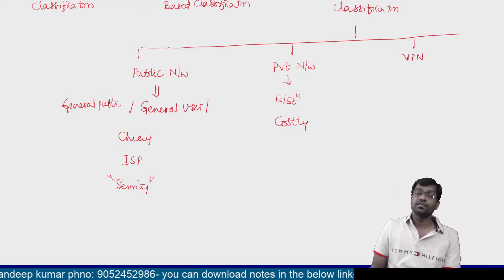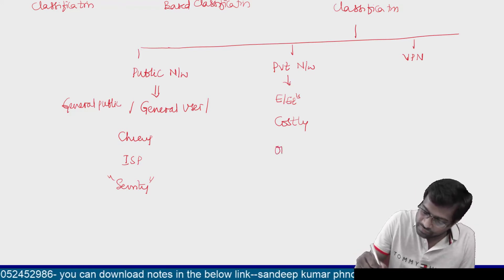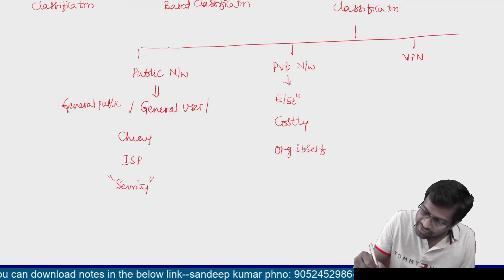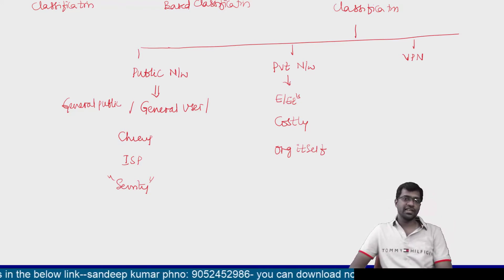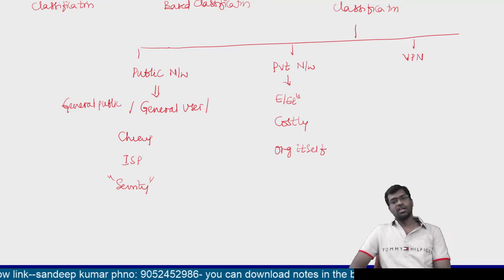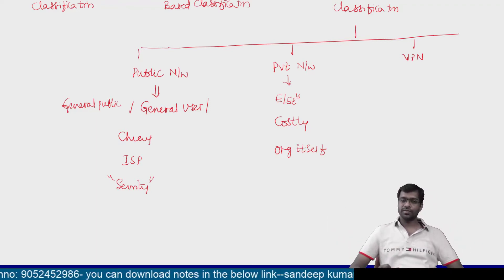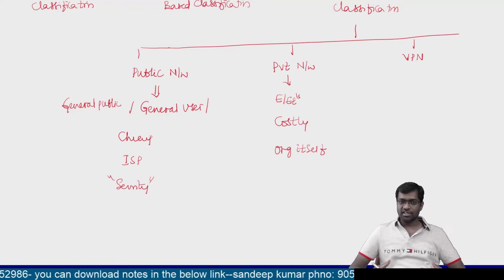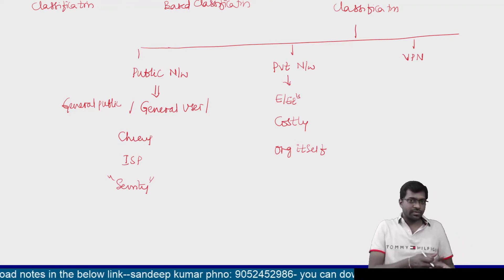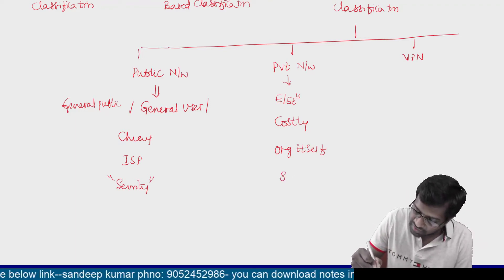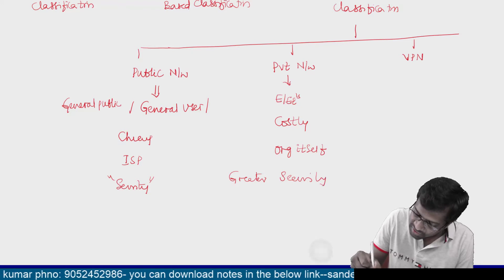Who will maintain private networks? A third party will not maintain them — the organization itself will maintain the networks. That is the reason these are costly networks. What was the disadvantage of public networks? The security problem — any person can enter that network. So if you want to transmit very secured data, you cannot use a public network; you have to use a private network. Private networks offer greater security.